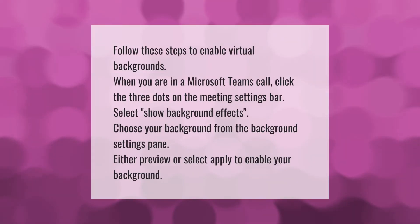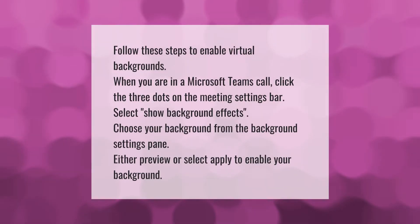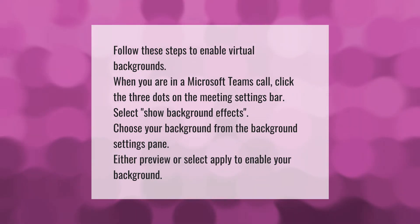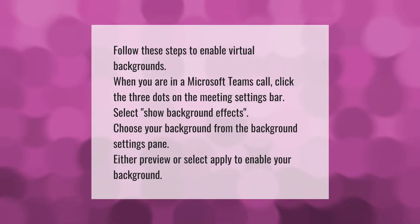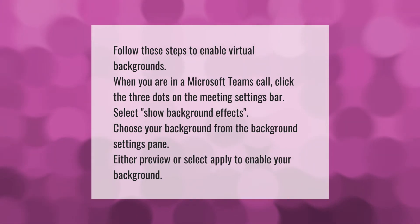Follow these steps to enable virtual backgrounds when you are in a Microsoft Teams call. Click the three dots on the meeting settings bar, select 'Show Background Effects', choose your background from the background settings pane, then either preview or select 'Apply' to enable your background.